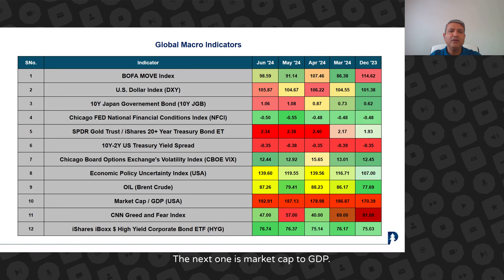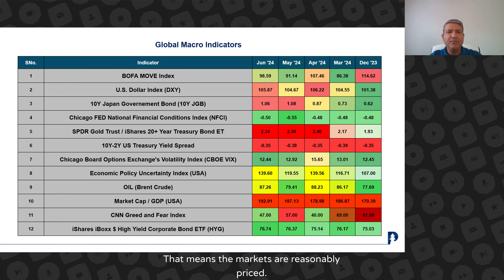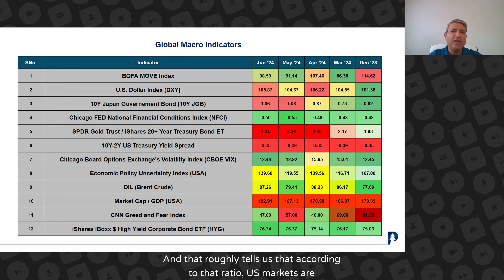The next one is market cap to GDP, also known as the Warren Buffett ratio. According to the Warren Buffett ratio, when this ratio is around 80 to 100%, markets are reasonably priced. But as you can see, we are at 192% — this is the second time we've seen this kind of ratio. That roughly tells us that according to that ratio, US markets are significantly overvalued at this point.